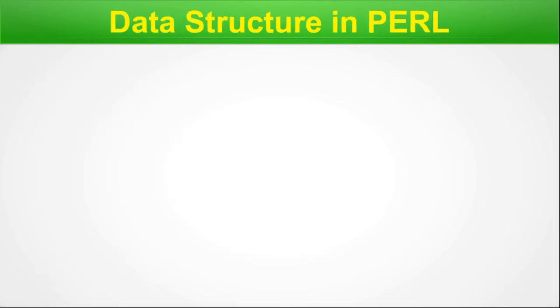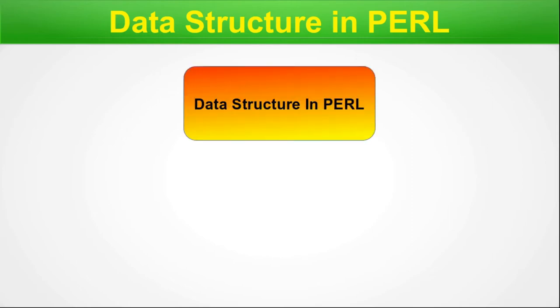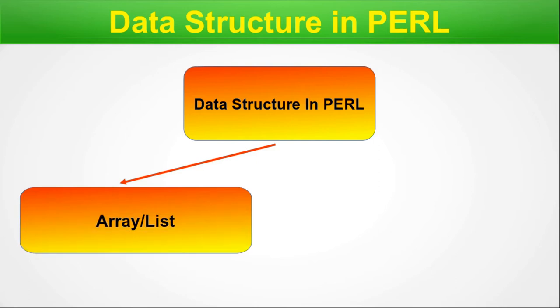Data structures in Perl — beginning here, I would like to emphasize that in Perl the data structures are generically called lists. The data structures in Perl are sub-categorized into two parts. The first one is array or list. It is most of the time called list or array; array is the more generic term, though in some texts you will find it referred to as a list.